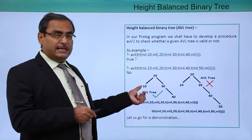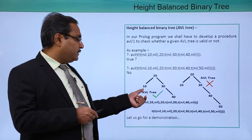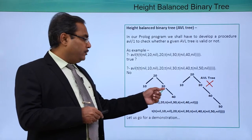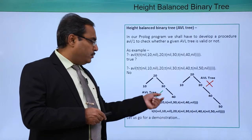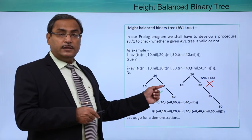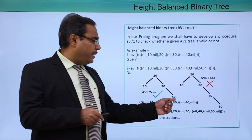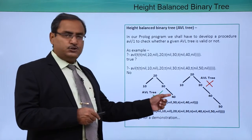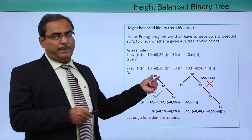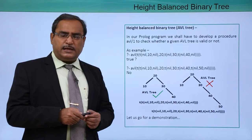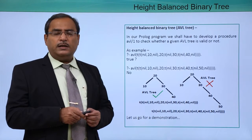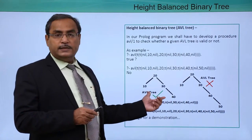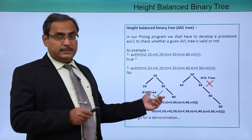The balance factors for this tree are: 0 minus 0 equals 0; 0 minus 1 equals minus 1; 0 minus 0 equals 0; and 1 minus 2 equals minus 1. So the balance factors are ranging from minus 1, 0, and plus 1, and that is why it is height balanced.